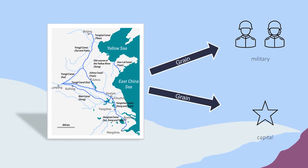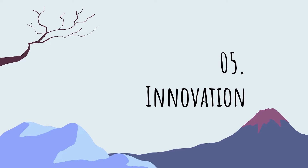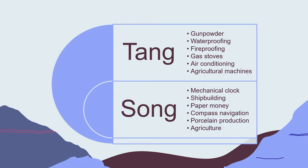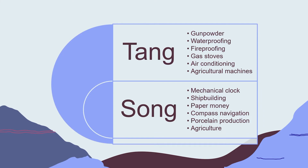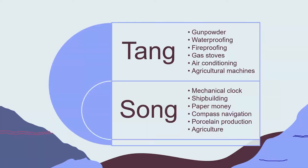Lastly, we're going to cover other innovations between the two dynasties. Starting with the Tang dynasty, they created things like gunpowder, waterproofing, fireproofing, gas stoves, air conditioning, and agricultural machines. All of these contributed to the economy and made the dynasty more modern and innovative.